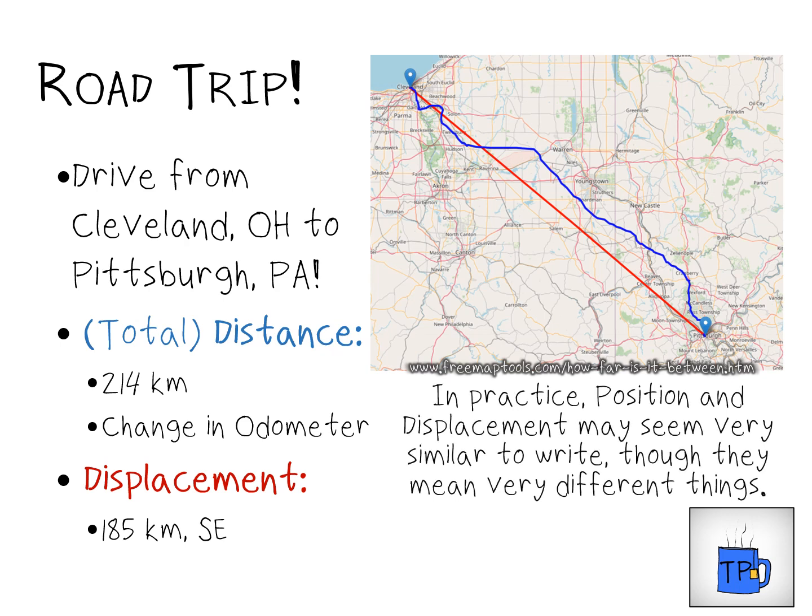One thing to be cautious of is that position and displacement, when you're writing them down, are very similar to each other — they'll have some sort of distance term and a direction term — although the position of an object is very different than the displacement of an object, so you do want to keep those straight. Once we get past this initial stuff, you're mostly going to be talking about displacements anyway.